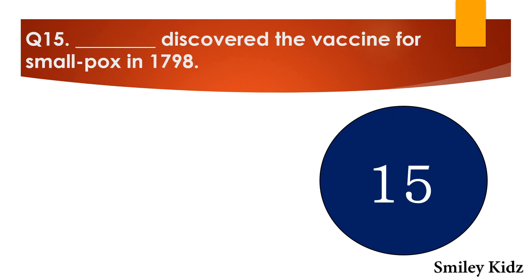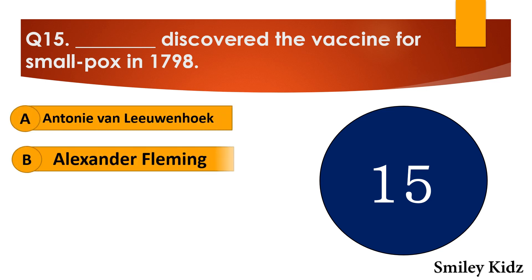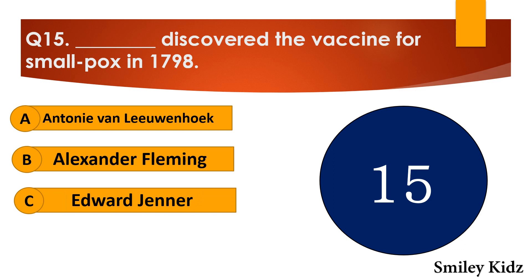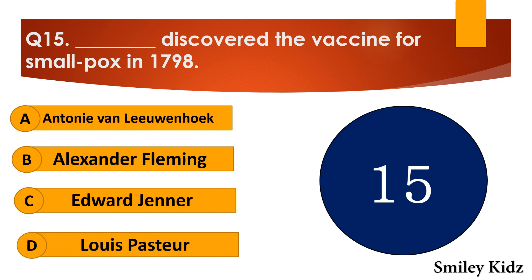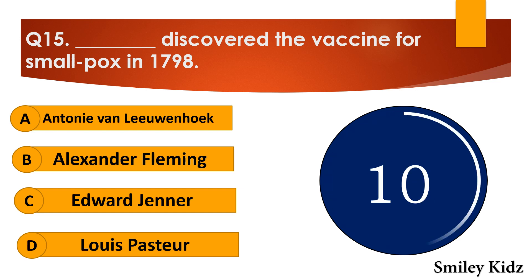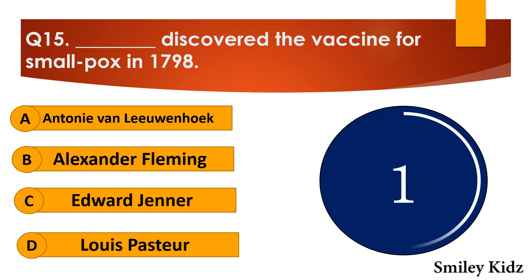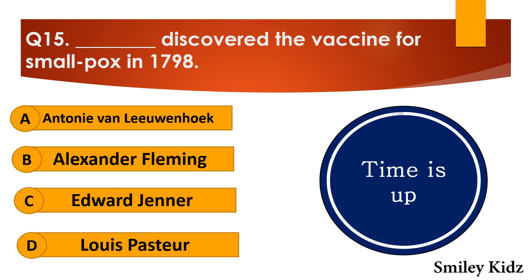Question number fifteen: Dash discovered the vaccine for smallpox in 1798. The options are: A. Antony van Leeuwenhoek, B. Alexander Fleming, C. Edward Jenner, or D. Louis Pasteur. Your time starts now. Your time is up and the right answer is option C — Edward Jenner. Edward Jenner discovered the vaccine for smallpox in 1798.